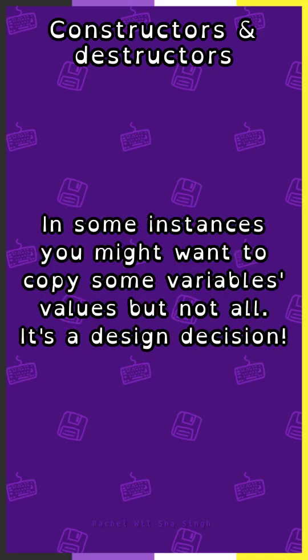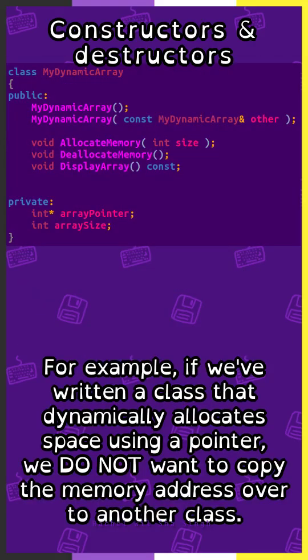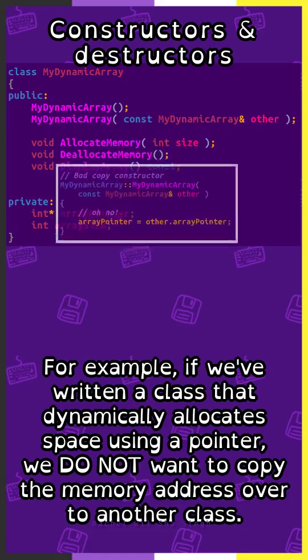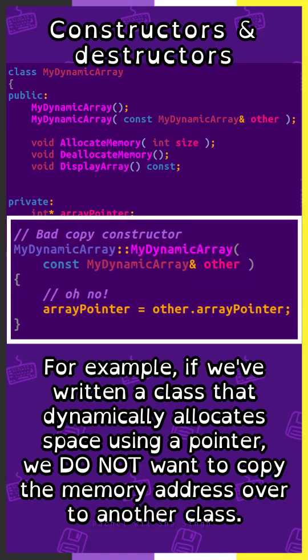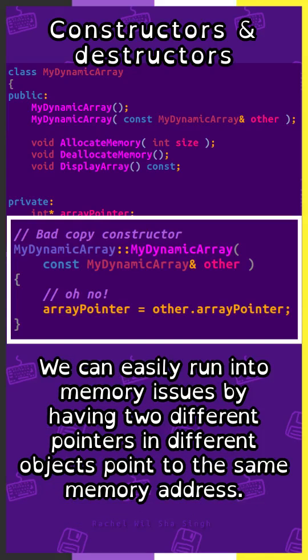In some instances, you might want to copy some variable's values, but not all — it's a design decision. For example, if we've written a class that dynamically allocates space using a pointer, we do not want to copy the memory address over to another class. We can easily run into memory issues by having two different pointers in different objects point to the same memory address.